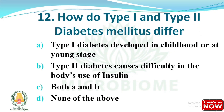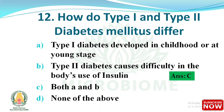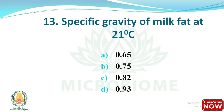Question: How do Type 1 and Type 2 diabetes mellitus differ? Type 1 diabetes develops in childhood or at a young age, while Type 2 diabetes causes difficulty in the body's use of insulin.